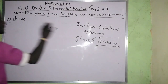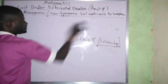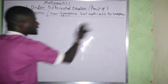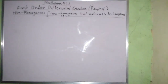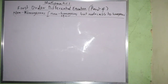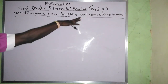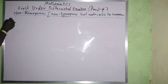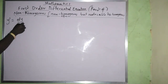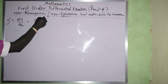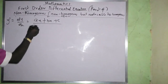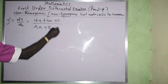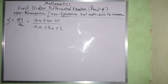Now let me start with the definition. When talking about non-homogeneous equations that are reducible to homogeneous, the equation has the form: dy/dx equals (ax + by + c) divided by (Ax + By + C).